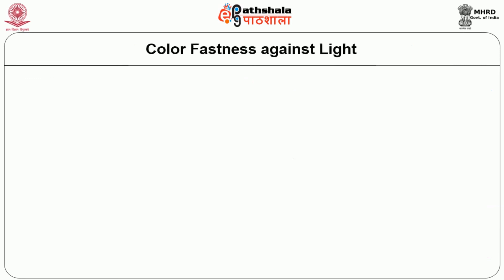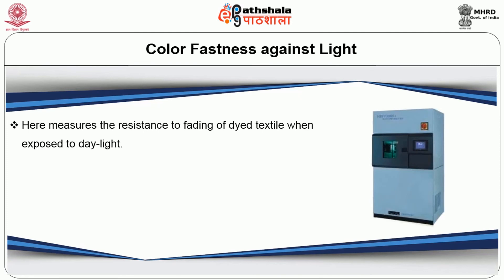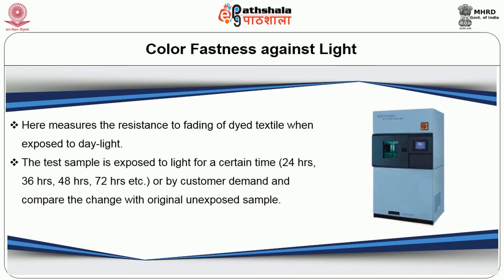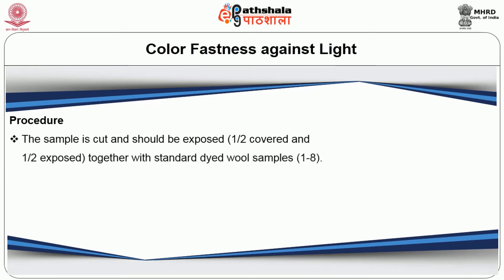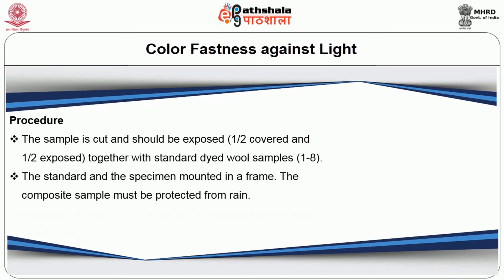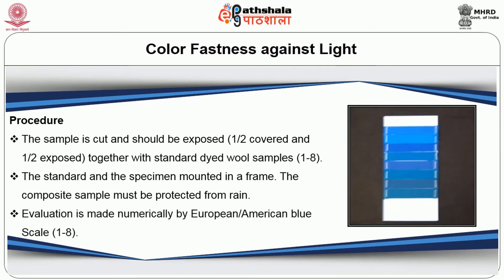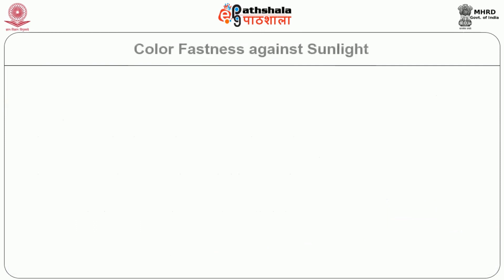Colorfastness against light: the resistance to fading of dyed textiles when exposed to daylight is evaluated. The test sample is exposed to light for a certain time such as 24 hours, 36 hours, 48 hours, or even 72 hours, as per customer demand, and the change is compared with the original unexposed sample. It is graded using blue scales in the range 1 to 8. Procedure: the sample is cut and exposed in such a way that half is covered and half is exposed alongside standard dyed wool samples of grades 1 to 8. The standard and specimen are mounted in a frame, and the composite sample must be protected from rain. Evaluation is performed using the European or American blue scale in grading 1 to 8.